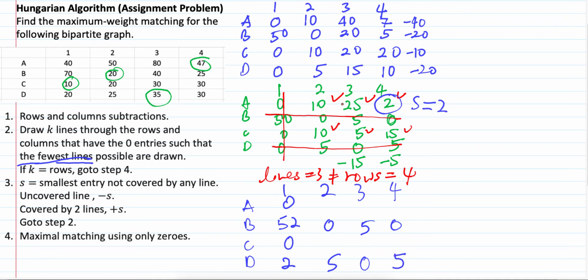Uncovered by line minus 2. So, this one 8. 25 minus 2, 23. 2 minus 2, 0. 8, 3, 13. Go back to step number 2.